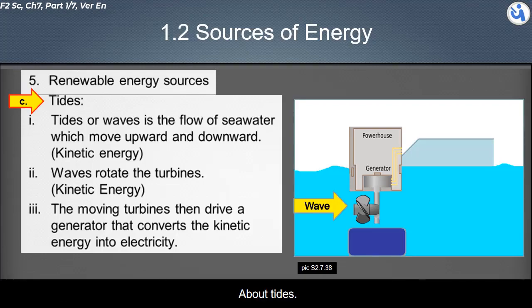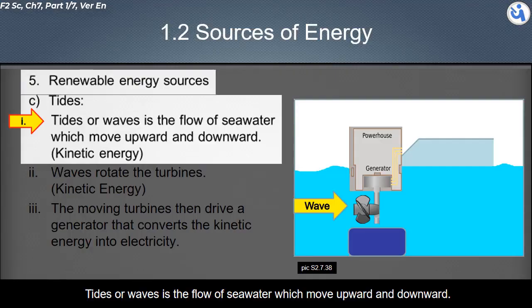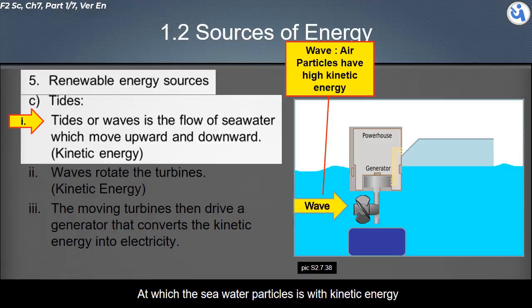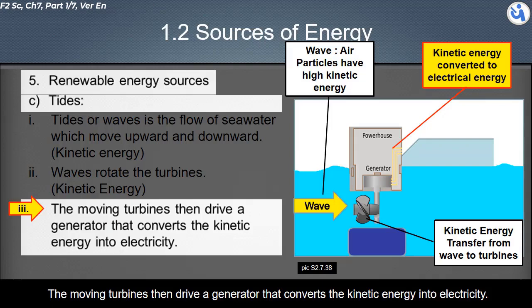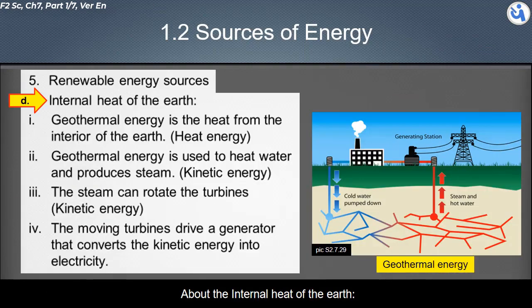Tides or waves are the flow of seawater moving upward and downward, where seawater particles carry kinetic energy. Waves rotate the turbines, transferring kinetic energy from the waves to the turbines. The moving turbines then drive a generator that converts the kinetic energy into electricity.